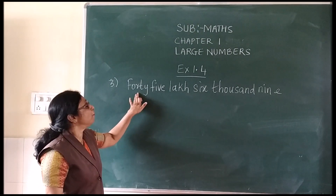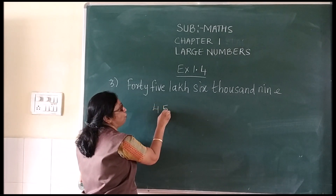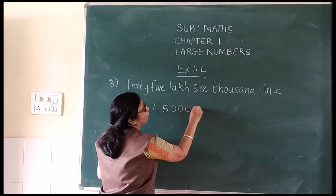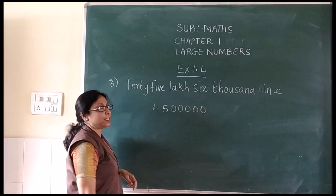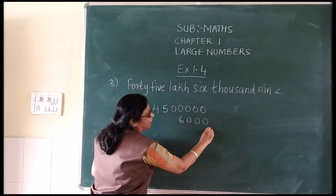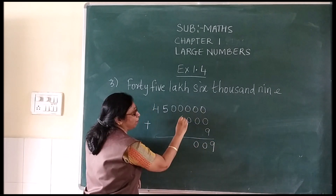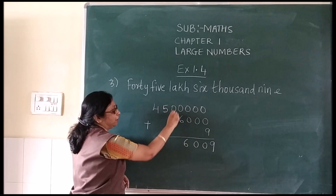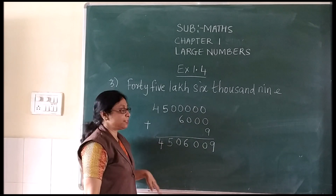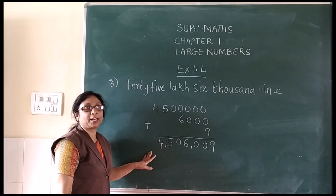Now we will see the third sum: 45 lakh. So 45 — 4 and 5. Then lakh has 5 zeros: 1, 2, 3, 4, 5. We have 6,000 — 1000 has 3 zeros, then 6. Then 9, so 9, 0, 0, 0, 0 plus 6 = 6. Then we have 0 here, 5 and 4. Then place the comma 1, 2, 3 — 1, 2, 3 as per the international place value.